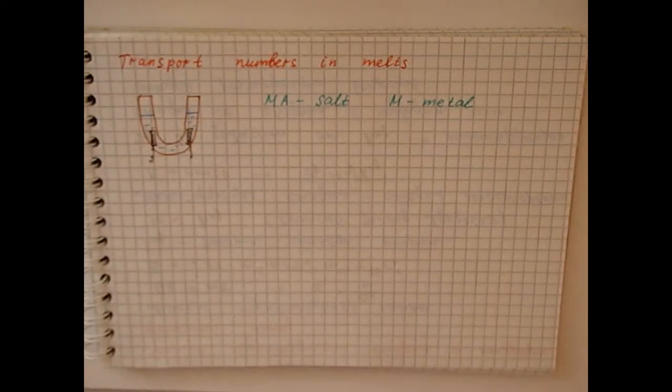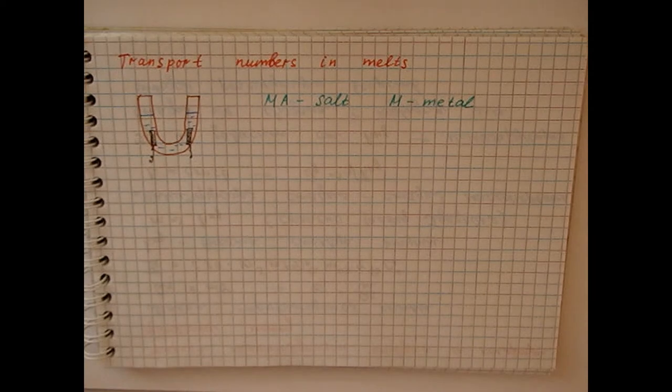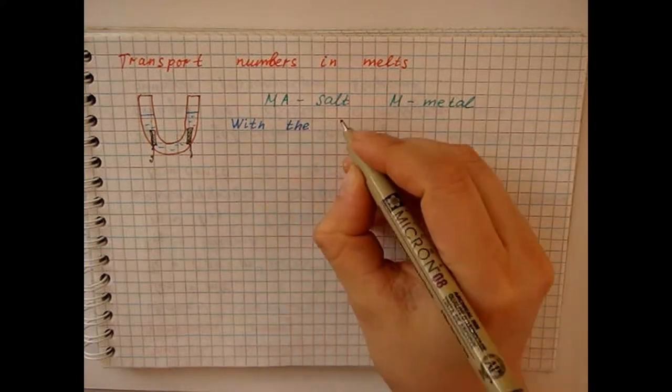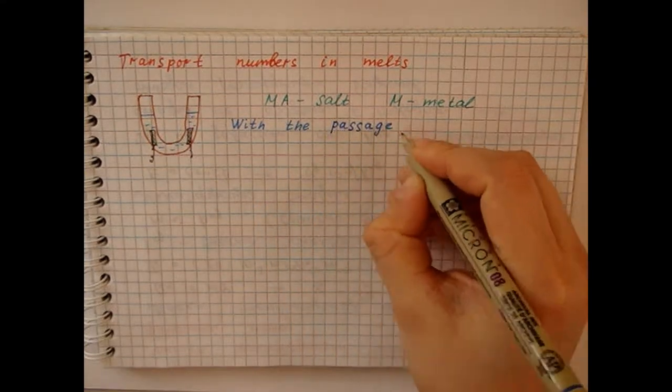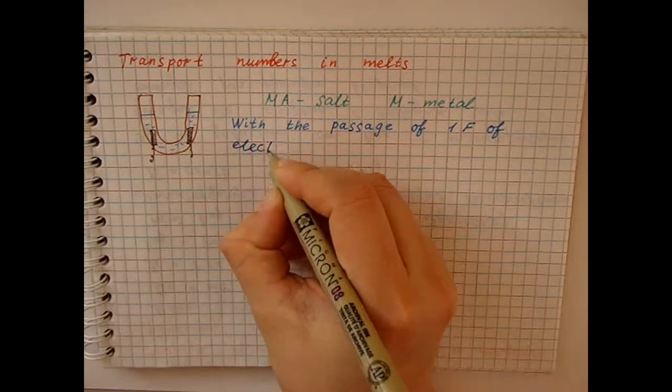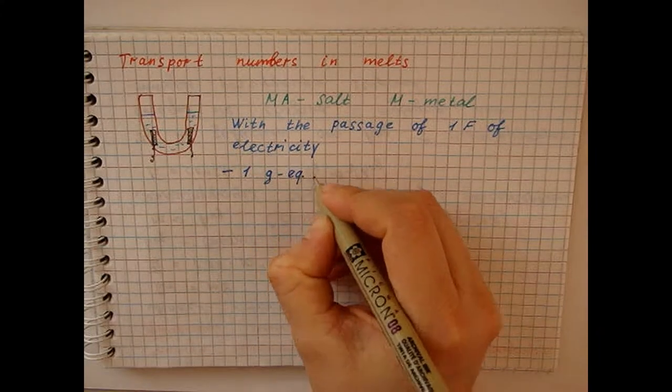Direct current flow through the melt, as well as through an electrolyte solution, is possible only if electrochemical transformations occur on the electrodes, obeying Faraday's laws. With the passage of one Faraday of electricity, one gram equivalent of metal will be released at the cathode.